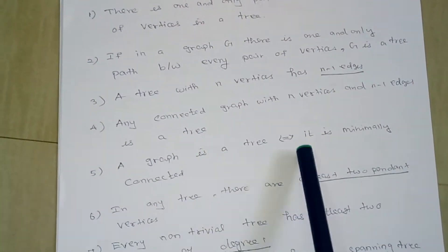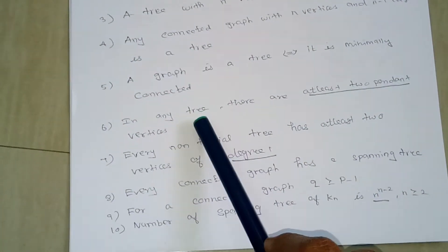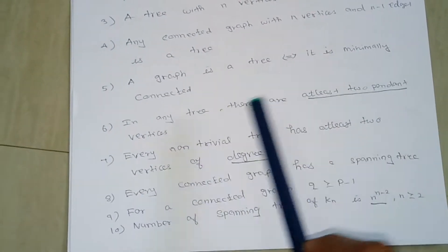A connected graph is a tree if and only if it is minimally connected. Next, in a tree, there are at least two pendant vertices.